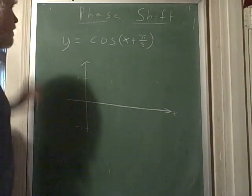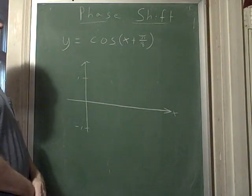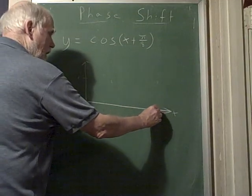In this one, we're going to do another phase shift. And it's y equals cosine of x plus pi over 8 units. That means our normal cosine would go where?